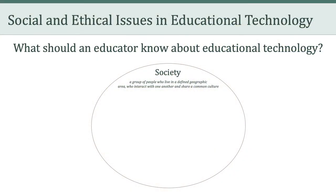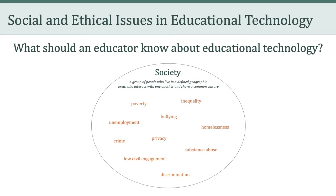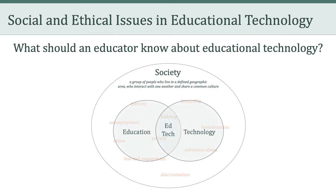When we left off last week, we were talking about what an educator should know about educational technology. To help frame that discussion, we talked about society as a group of people who live in a defined geographic area, interact with one another, and share a common culture. We also talked about social ills such as poverty, privacy, inequality, and discrimination, and how institutions like education and technology have been created to help address some of these problems.